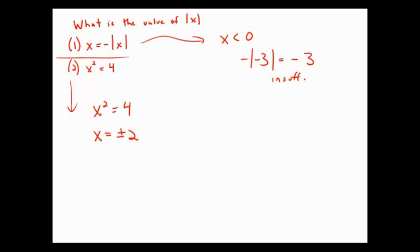So x equals plus or minus two. The reason is that positive two squared is positive four, but also negative two squared is positive four. So there are two values for x.